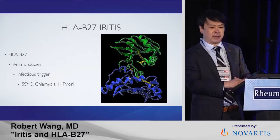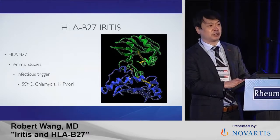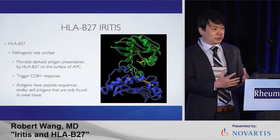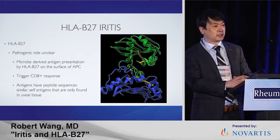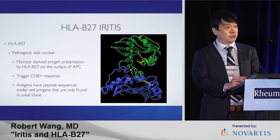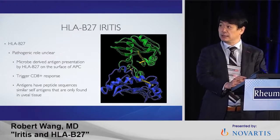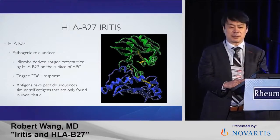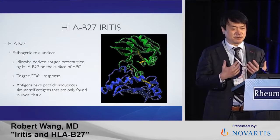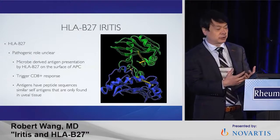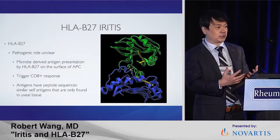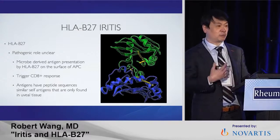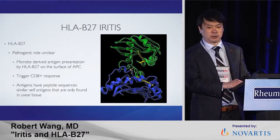We know about the bacterial triggers: Salmonella-Shigella, Yersinia, Campylobacter, H. pylori, and Chlamydia. When you look at animal models, we know that HLA-B27 can present and trigger the CD8 response, and the antigens are actually similar to self-antigens found in the eye. This is why we see it and why we have animal models that can trigger autoimmune uveitis.